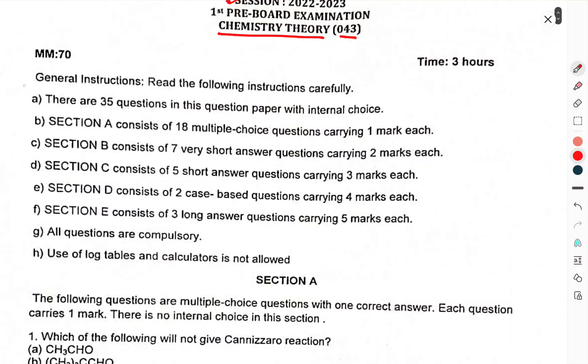First of all, General Instructions: Read the following instructions carefully. There are 35 questions in this question paper with no choice. Section A consists of 18 multiple choice questions carrying 1 mark each. Section B consists of 7 very short answer questions carrying 2 marks each.